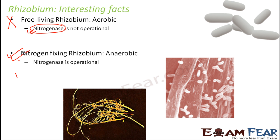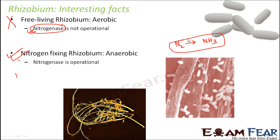So with the help of nitrogen fixing bacteria, the atmospheric nitrogen will get converted or fixed into the soil in a more usable form. As a result of nitrogen fixation, the atmospheric nitrogen will get converted into ammonia — whether it happens by atmospheric fixation, industrial fixation, or biological fixation. The end result of nitrogen fixation is that atmospheric nitrogen gets converted into ammonia.